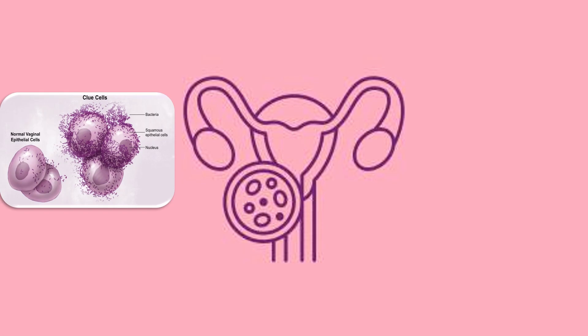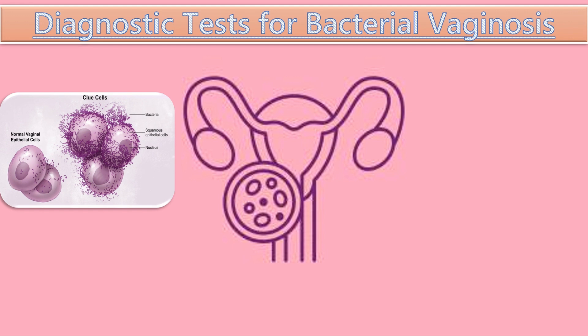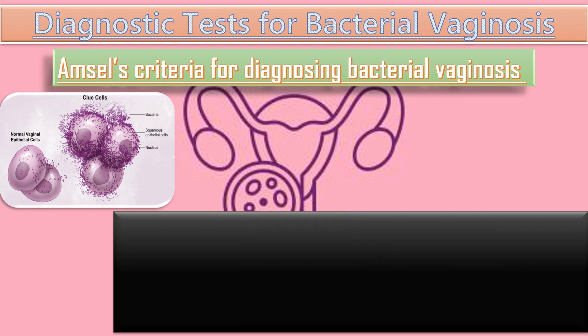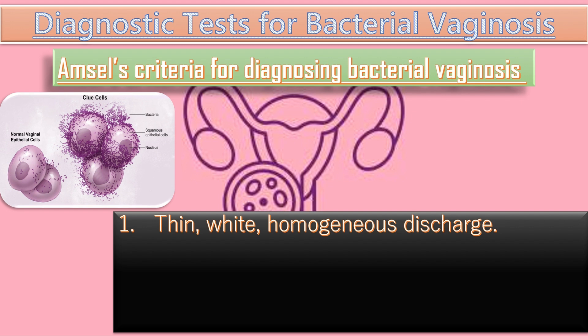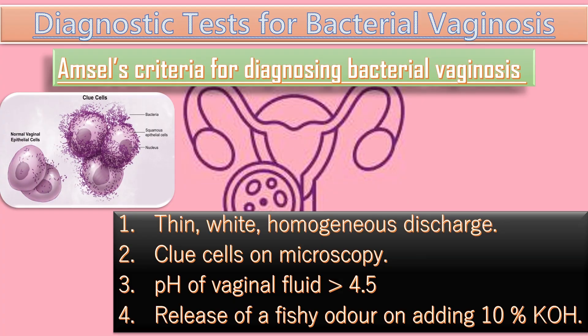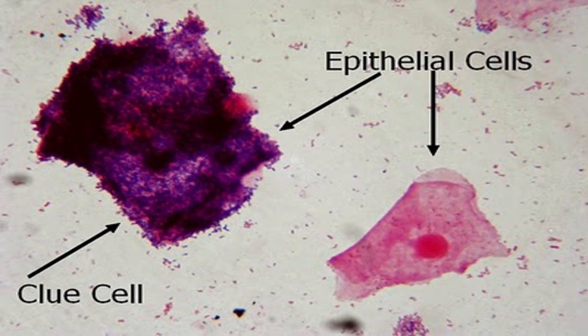The diagnostic tests for bacterial vaginosis include Amsel criteria, introduced in 1984. According to Amsel criteria, at least 3 out of 4 features should be present for diagnosis to be confirmed: firstly, thin white homogeneous discharge; secondly, clue cells on microscopy; thirdly, pH of vaginal fluid more than 4.5; and fourthly, release of a fishy odor on adding alkali, meaning 10% KOH. This test is rarely performed these days.